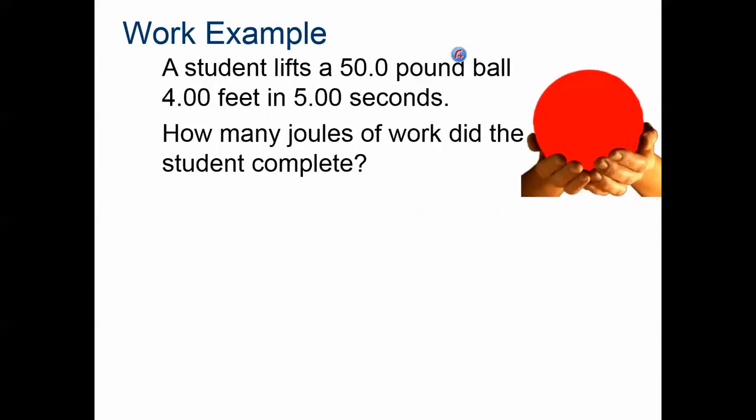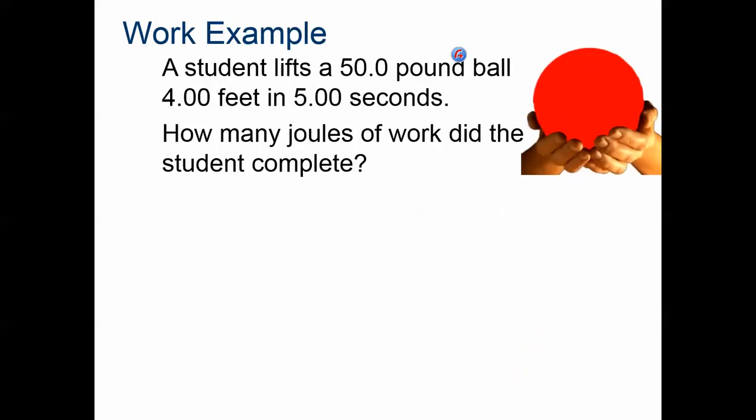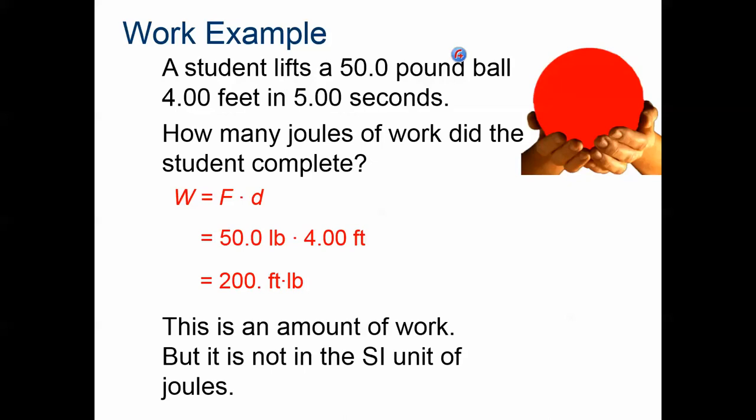In this particular example here, if a student lifts a 50-pound ball 4 feet in 5 seconds, you know that the force times the distance would be 200 foot-pounds, or 50 pounds times 4 feet. There's also a conversion. It's not an SI unit. That's the amount of work, foot-pounds, but in joules...